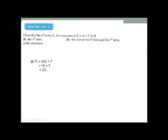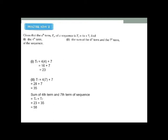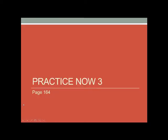Now for the second part, they are asking for the sum of the fourth and seventh terms. The fourth term is already 23. Now find the seventh term: substitute n = 7, so t7 = 4 times 7 plus 7 = 28 plus 7 = 35. Now add both values: 23 plus 35 equals 58.